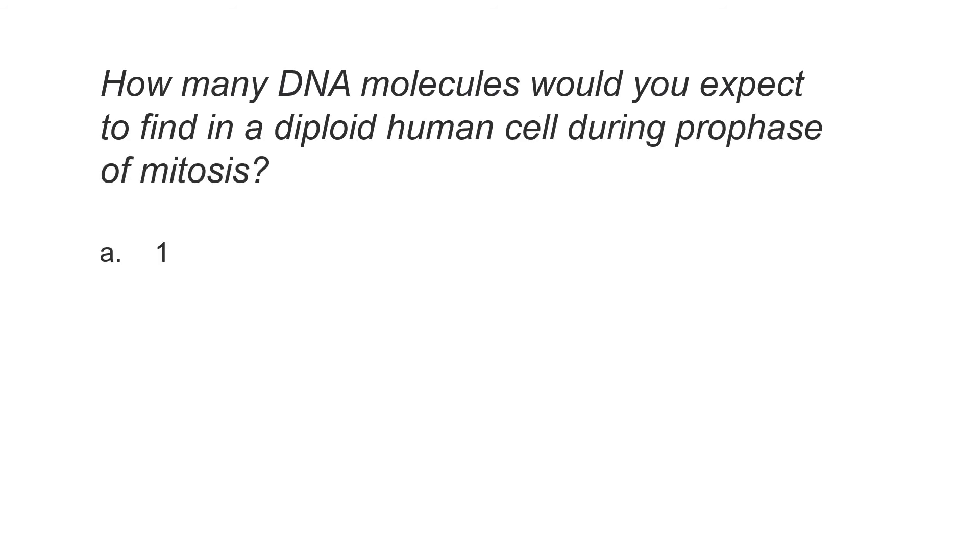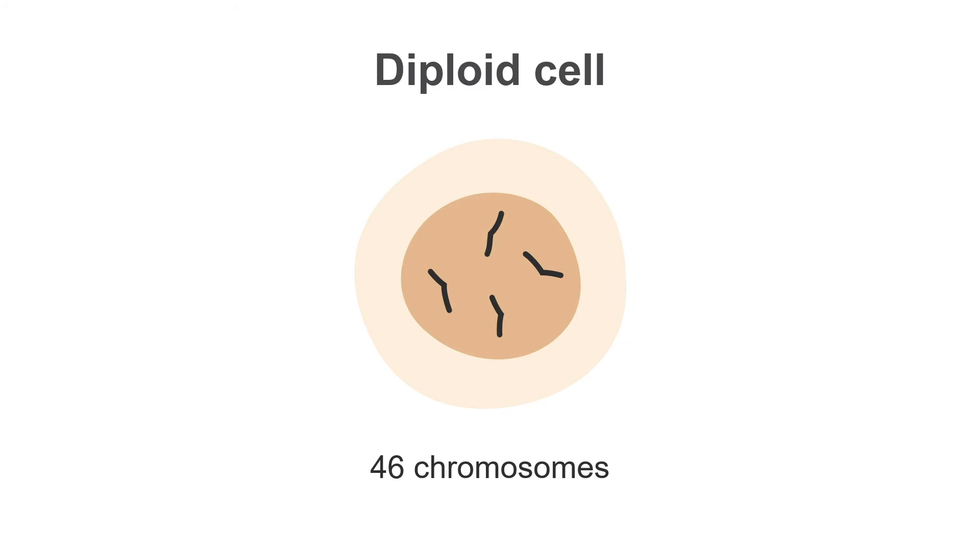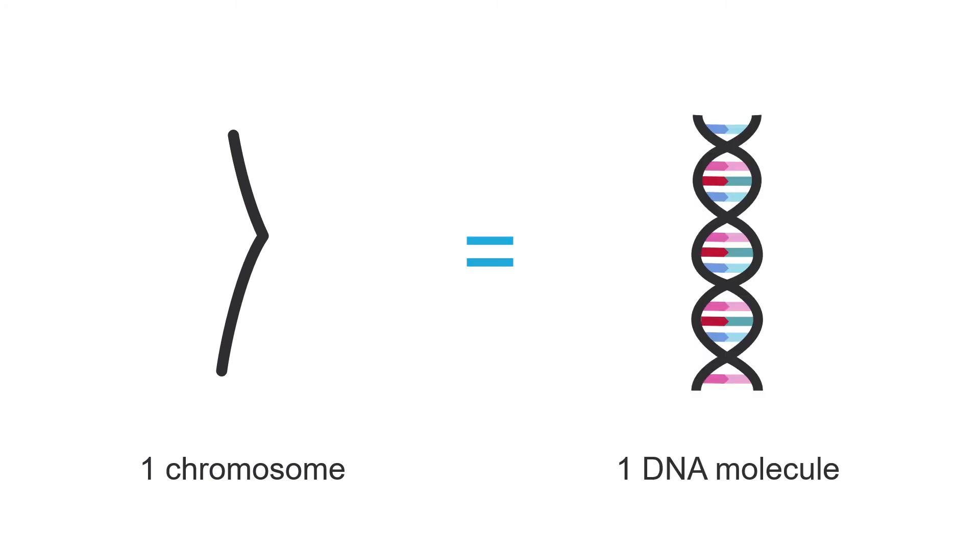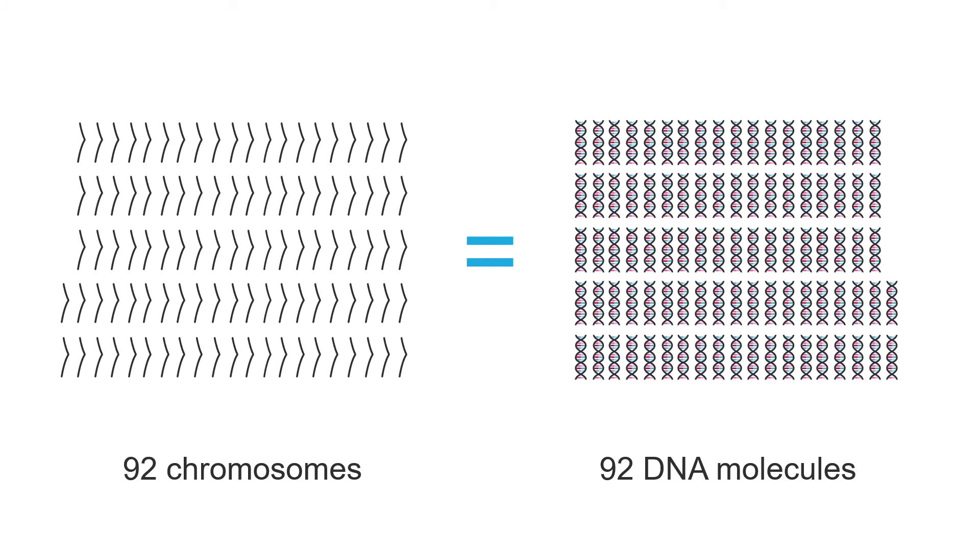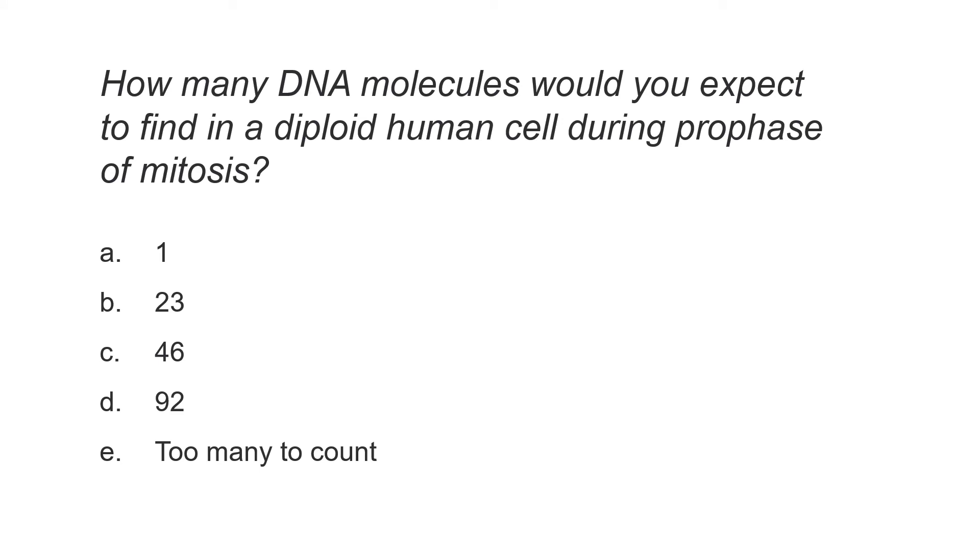Take this example. How many DNA molecules would you expect to find in a diploid human cell during prophase of mitosis? This question requires the learner to know that a diploid human cell contains 46 chromosomes, and that in prophase of mitosis, the number of chromosomes is doubled, so there are 92 chromosomes at this stage. They also need to know that every chromosome is made up of one single DNA molecule. So 92 chromosomes represents 92 molecules of DNA. If they integrate all of this information, they will come up with the correct answer, which is 92.